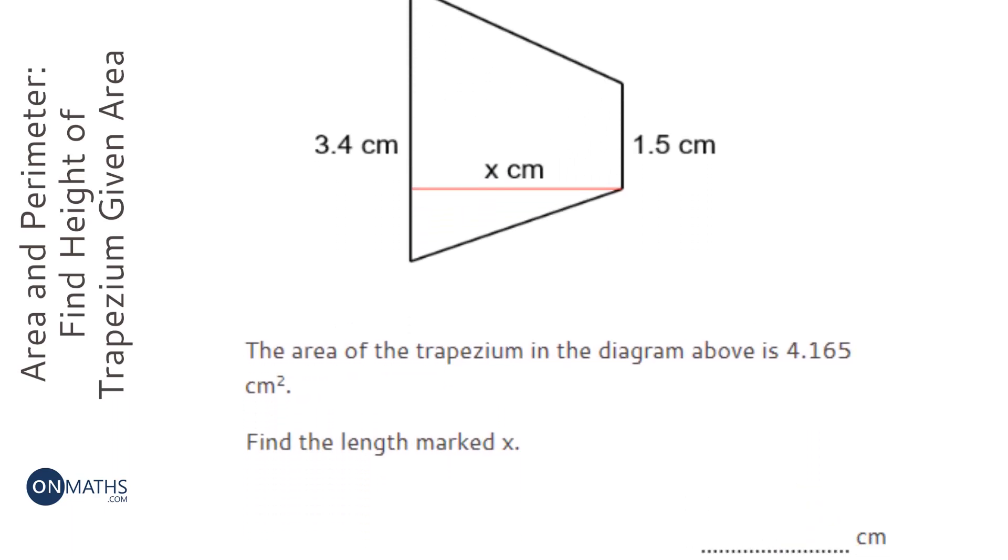So here we're given a trapezium, and we know it's a trapezium because it's got two sets of parallel sides, and it's four-sided—well, one pair of parallel sides.